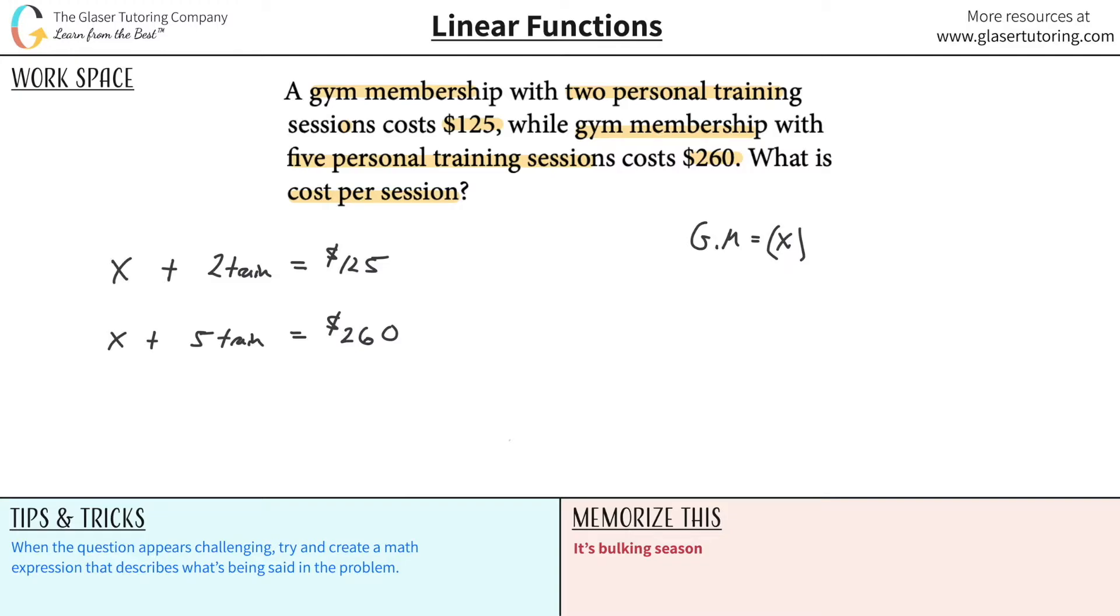Now, what else don't we know? Well, we don't also know the cost per session. But you might say, well, where is the cost per session? Where is it? How could I make a mathematical expression that breaks down how much two training sessions costs? Or how can I make a mathematical expression that breaks down how much five training sessions cost? We might say, well, five training sessions would cost five times the amount per session. Wait a minute. They wanted me to find the cost per session or the amount per session.